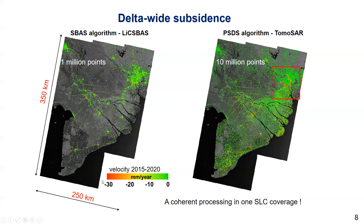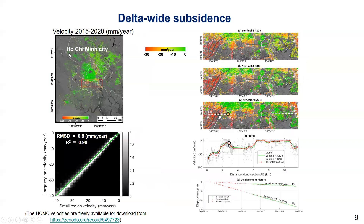Green indicates area stability while red indicates unstable infrastructure areas. We can map the average subsidence for very large regions — 250 km in range and 350 km in azimuth. For validation, we first consider comparing to the result of a small area analysis. Let's move to the Ho Chi Minh City area for more details.